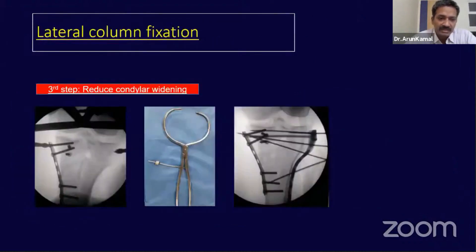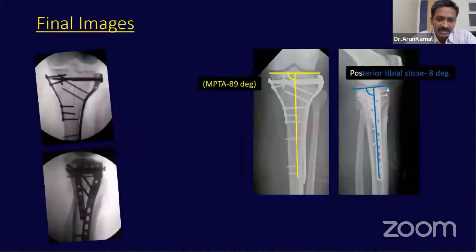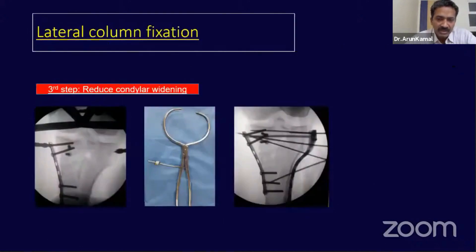All intra-articular loose fragments were removed. On the lateral side, a periosteal clamp was very useful to reduce the condylar widening. Multiple K-wires were used while completing the screws, and a raft screw technique was used to address the lateral cortex.